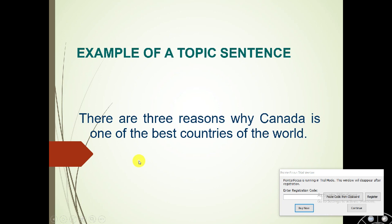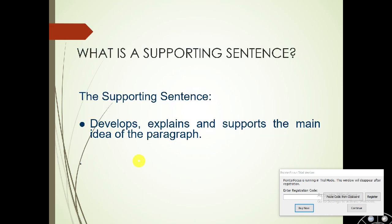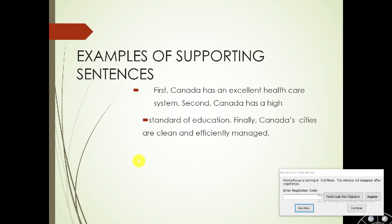For example, given the topic sentence 'There are three reasons why Canada is one of the best countries of the world': first, Canada has an excellent health care system; second, Canada has a high standard of education; finally, Canada's cities are clean and efficiently managed. These sentences are called supporting sentences because each develops, explains, and supports the main idea.